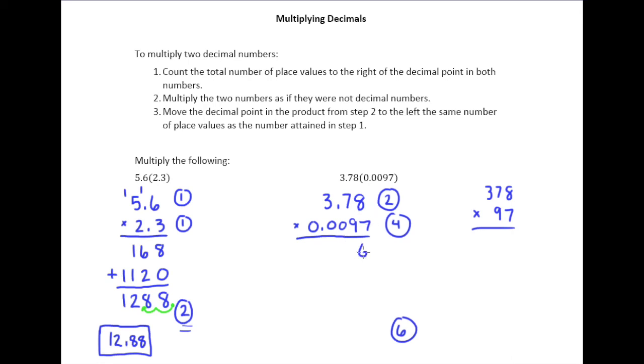So 7 times 8 is 56, so we have a 6, carry the 5. 7 times 7 is 49, plus 5 is 54. 7 times 3 is 21, plus 5 is 26.